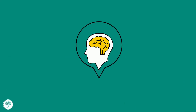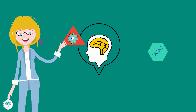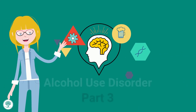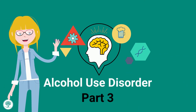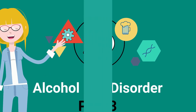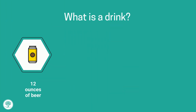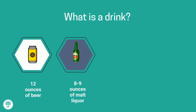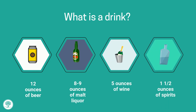This lesson will cover the physical effects of alcohol and alcohol withdrawal. What is a drink? A standard drink is 12 ounces of beer, 8 to 9 ounces of malt liquor, 5 ounces of wine, or 1.5 ounces of spirits or brandy. Each of these contains approximately the same amount of alcohol.